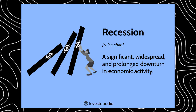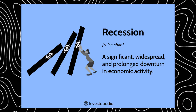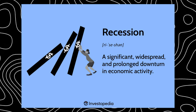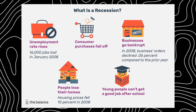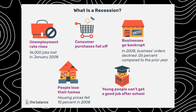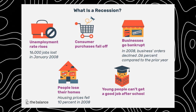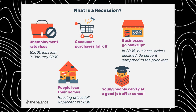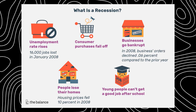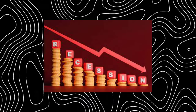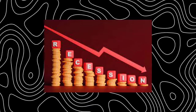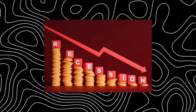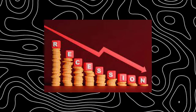Recession: a recession is a significant decline in financial activity across a country's economy that can last for months or even years. It's visible in factors like GDP, income, employment, output, and manufacturing. Understanding recessions can help you prepare for economic downturns. The last significant U.S. recession was the Great Recession from 2007 to 2009, while the COVID recession was the shortest on record. The rate of recessions has decreased over the past 40–50 years thanks to modern systems and tools.